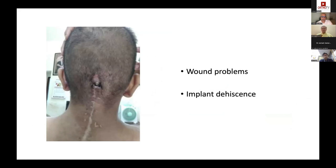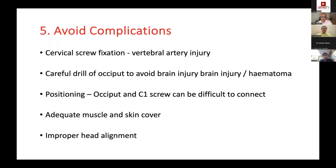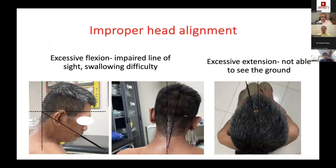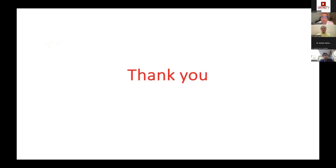Other points: take care that your occipital probe does not breach intracranially — brain injury and hematomas have been seen. If muscle cover is inadequate, you can have implant dehiscence — the scalp in elderly patients is very thin, which can be a nightmare. Additionally, poor head alignment results in patients unable to gaze straight or seeing too far up or down. If you haven't done this routinely, please seek help from seniors to learn these tips and tricks.